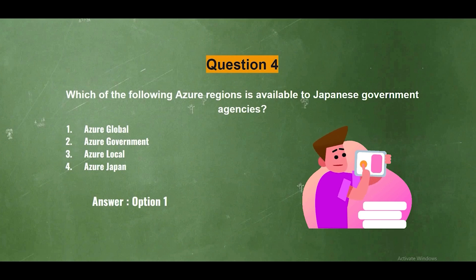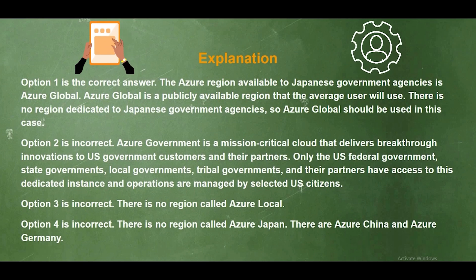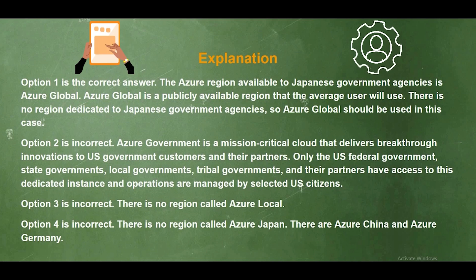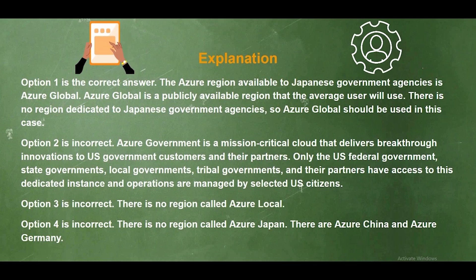And the answer is option one. Azure Global is the correct answer. The Azure region available to Japanese government agencies is Azure Global, which is a publicly available region that the average user will use — there is no region dedicated to Japanese government agencies. Option two is incorrect: Azure Government is a mission-critical cloud for US federal, state, local, and tribal governments and their partners only. Option three is incorrect — there is no region called Azure Local. Option four is incorrect — there is no region called Azure Japan, though Azure China and Azure Germany do exist.